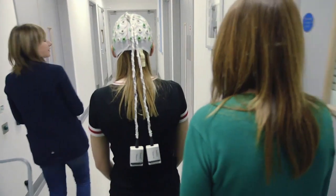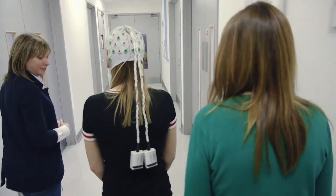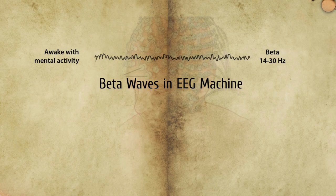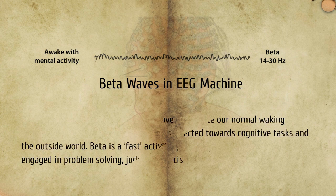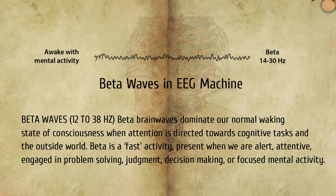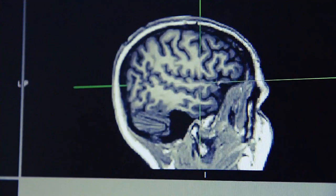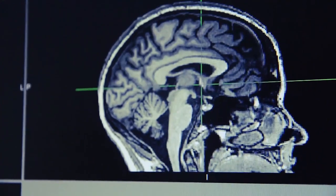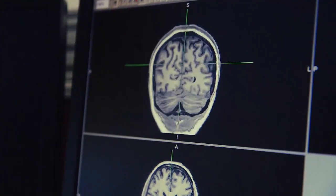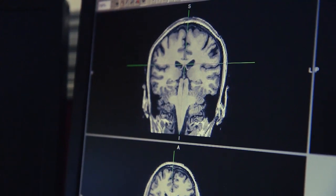Fourth is beta waves. Beta activity is fast activity with a frequency of 14 Hz and greater. It is usually seen on both sides in symmetrical distribution and is most evident frontally. It is accentuated by sedative-hypnotic drugs, especially benzodiazepines and barbiturates. It may be absent or reduced in areas of cortical damage. It is generally regarded as a normal rhythm and is the dominant rhythm in patients who are alert, anxious, or have their eyes open.